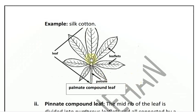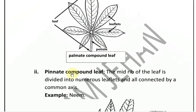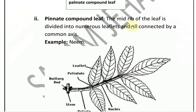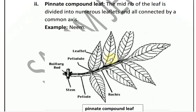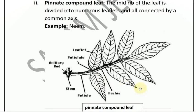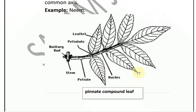Pinnate compound leaf: the midrib of the leaf is divided and leaflets are arranged along it. For example, neem. The leaflets are divided along the midrib. Each small leaf is called a leaflet. The pinnate compound leaf example is neem, as shown in the diagram.